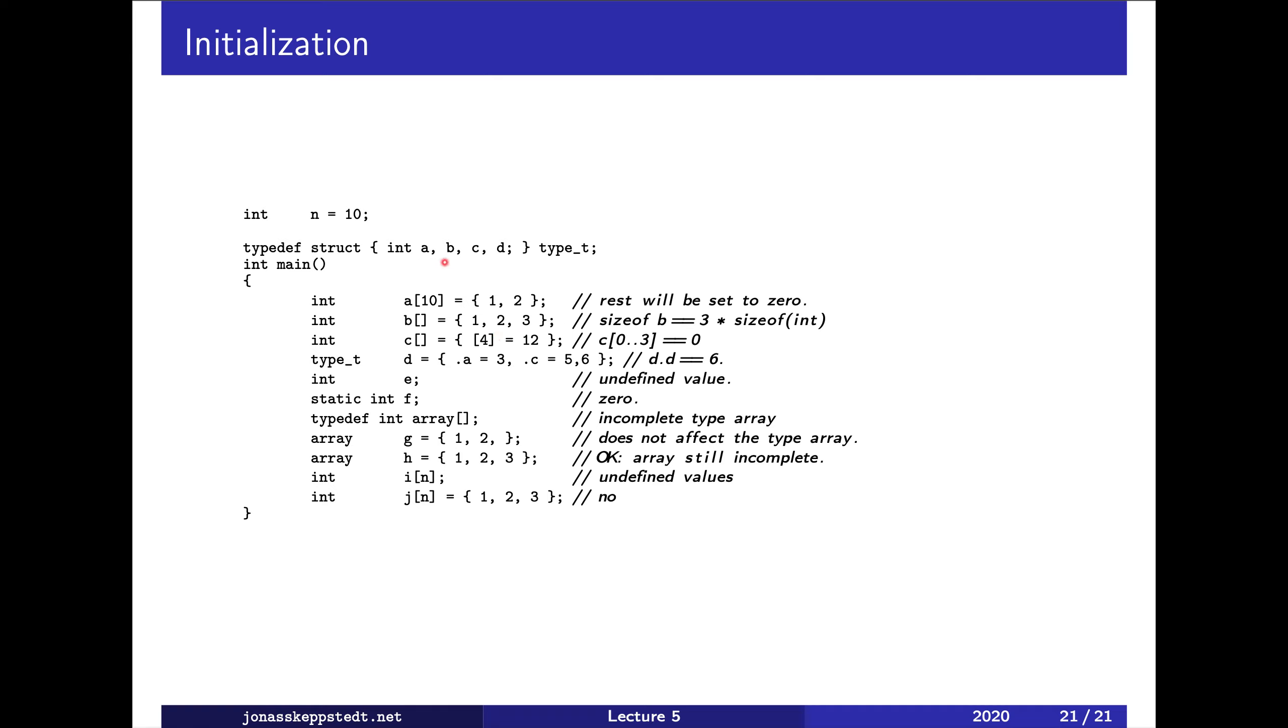Now we come to this struct and we can write it like this. Dot A is assigned to three. So that one is three. C is five. And the next D is six. B didn't get the value, so it's zero. This one is undefined. We know that. F is zero.